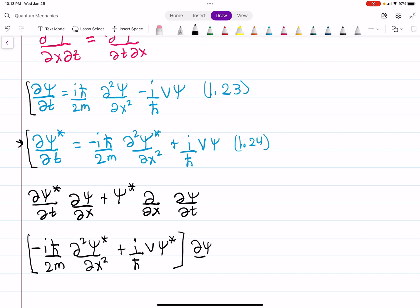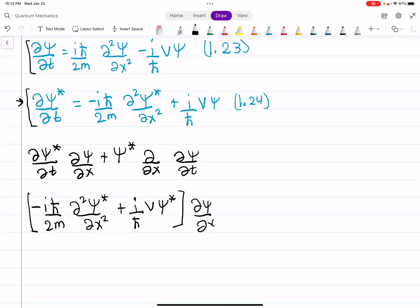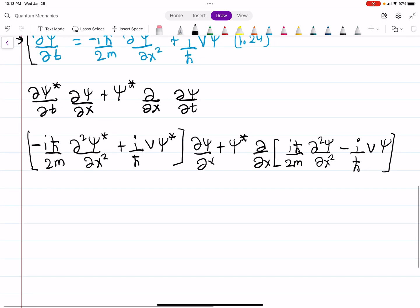We can rewrite this as minus i h-bar over 2m the second derivative of psi complex conjugated with respect to x plus i over h-bar the potential psi star. So we can rewrite that in this way. And then what do we have left? Well, we still have our d-psi dx, so I'm going to just slap that in at the end here. And now we can do the same thing with the other term, because we have psi star d by dx d-psi dt. And we can use equation 1.23 there to get that. So if we add that to our product rule, so we're rewriting our product rule still, and now we're going to substitute in what we have from the Schrödinger equation.